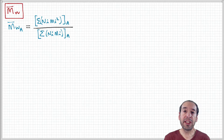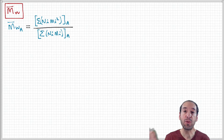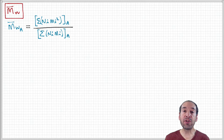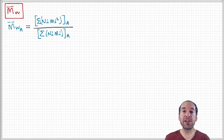We learned how to calculate the number average molecular weight of a mixture of two different polymer samples, A and B, each of which has its own distribution of chain lengths, but where we only know the number and weight average molecular weights associated with those distributions. Now let's see how we could calculate the weight average molecular weight of the mixture.